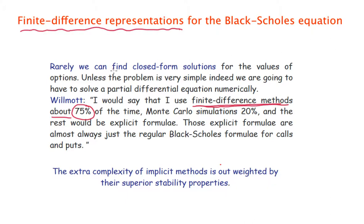The aim will be to find different finite difference representations for the Black-Scholes equation. We know that there are explicit and implicit methods, and it is important to keep in mind that the extra complexity of implicit methods is outweighed by their superior stability properties.